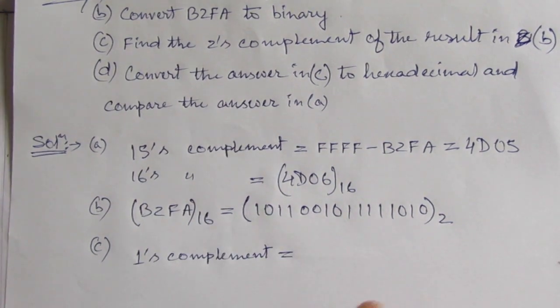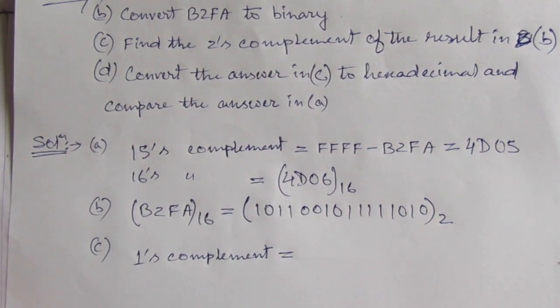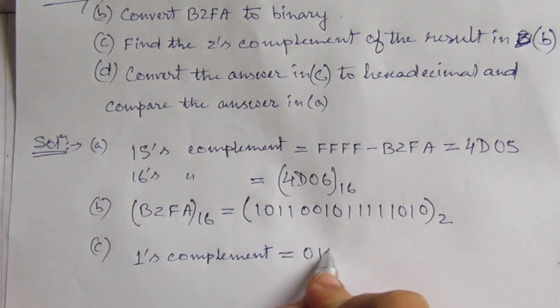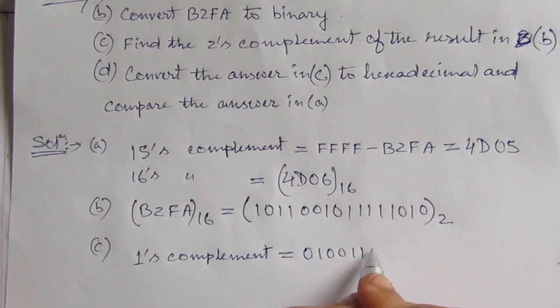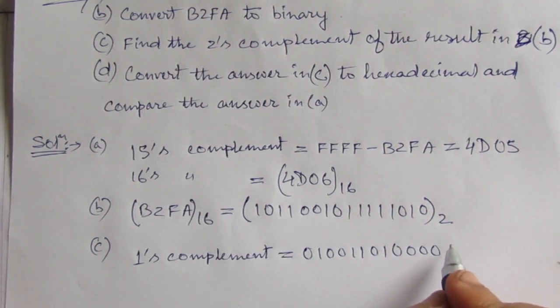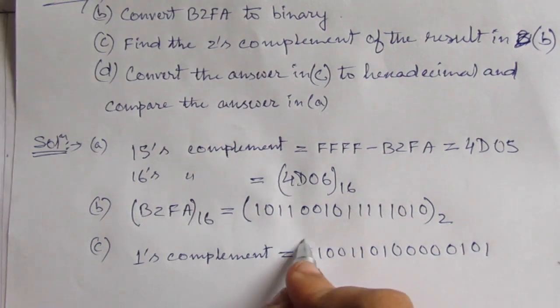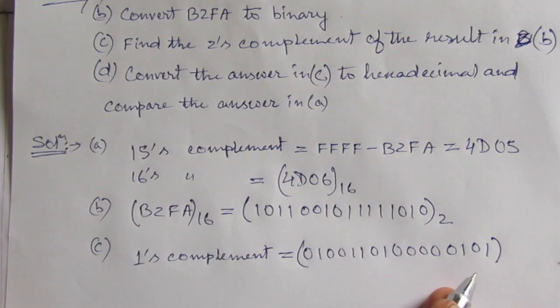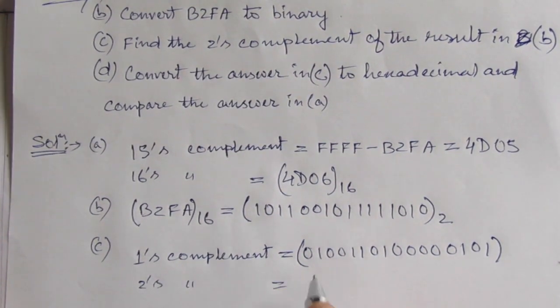So in the previous video, we saw that for finding out the 1's complement, we just need to invert the complete binary number. So it will be 0100110100000101. So this is the 1's complement.